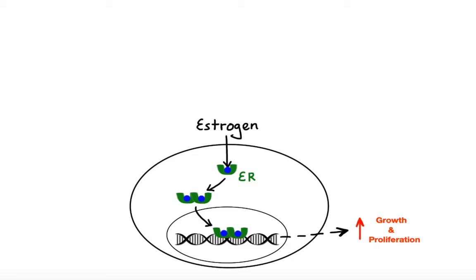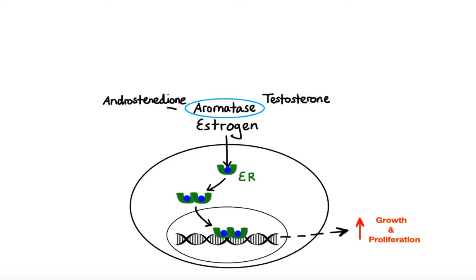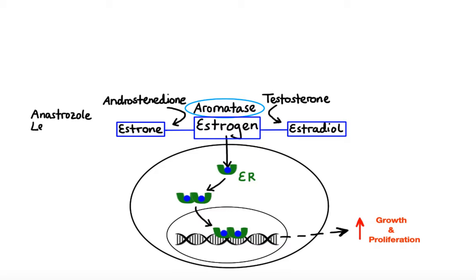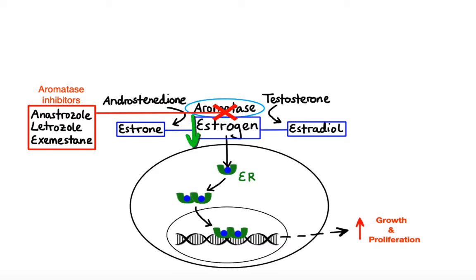There are four ways in which estrogen-dependent processes important in development of certain cancers, such as breast cancer, may be interrupted. The first and most direct method is to reduce the amount of estrogen in the body by targeting an enzyme called aromatase. The aromatase enzyme is substantially concentrated in adipose and hepatic tissues and is also found in elevated concentrations in breast cancer. It is primarily responsible for the conversion of androstenedione and testosterone to estrone and estradiol, respectively. Aromatase inhibitors such as anastrozole, letrozole, and exemestane work by blocking aromatase, reducing estrogen production, particularly in postmenopausal women.